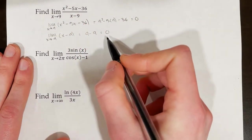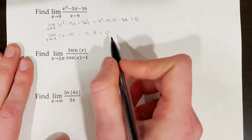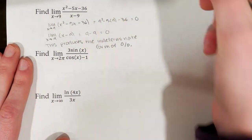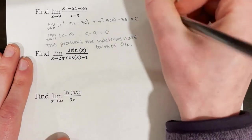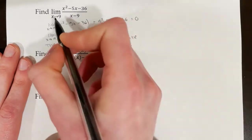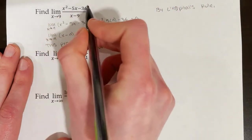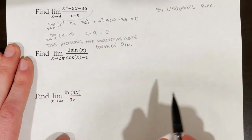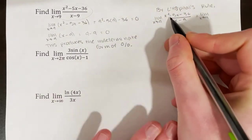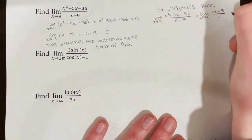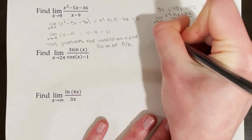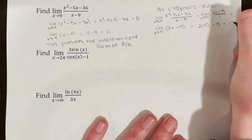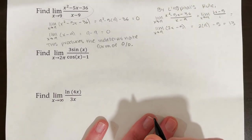This produces the indeterminate form 0/0, so we write that out. Then, by L'Hôpital's rule, the limit as x approaches 9 equals the limit as x approaches 9 of the derivative of the numerator over the derivative of the denominator: (2x − 5)/1. Using direct substitution: 2(9) − 5 = 18 − 5 = 13. So the actual value of this limit is 13.